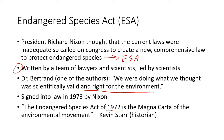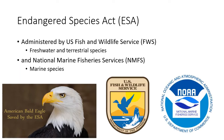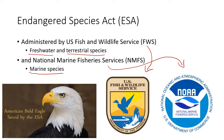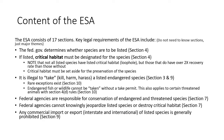The Endangered Species Act is federally regulated within two administrations. If the species is a freshwater or terrestrial species, it's regulated by the U.S. Fish and Wildlife Service. If it's a marine species existing in saltwater, it's regulated by the National Marine Fisheries Service, which is a division of NOAA — the National Oceanic and Atmospheric Administration. There are 17 sections to the ESA; you don't need to know all of them.